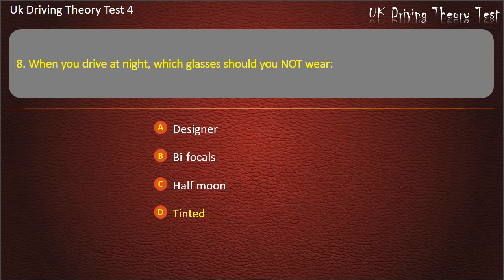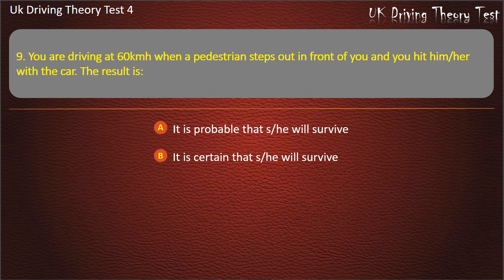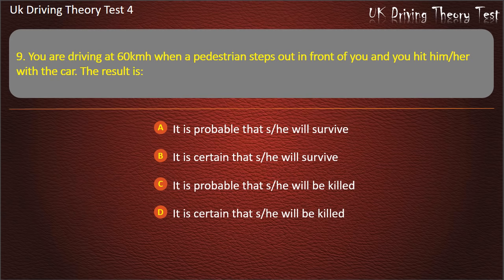Question 9. You are driving at 60 km/h when a pedestrian steps out in front of you and you hit them. The result is: it is probable that they will survive; it is certain that they will survive; it is probable that they will be killed; or it is certain that they will be killed. Answer: It is probable that they will be killed.